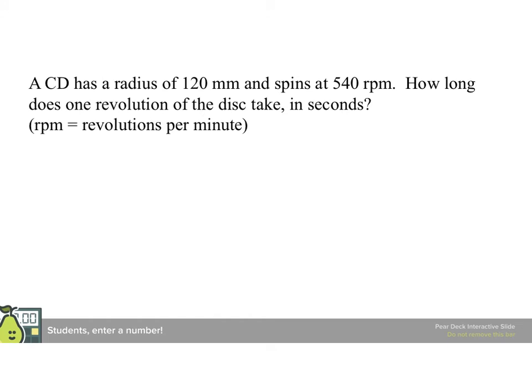A compact disc has a radius of 120 millimeters and spins at 540 RPM. How long does one revolution of the disc take in seconds? Remember, RPM is revolutions per minute.